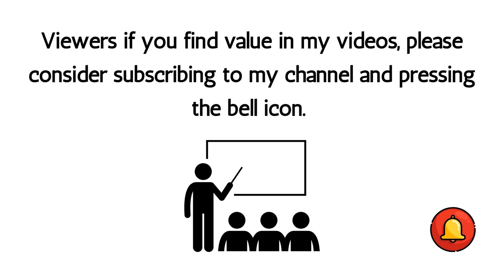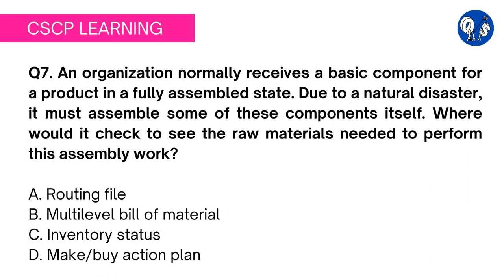If you find value in this video, please consider subscribing to my channel and pressing the bell icon. Question 7: an organization normally receives a basic component for a product in a fully assembled state. Due to a natural disaster, it must assemble some of these components itself. Where would it check to see the raw materials needed to perform this assembly work? Option A: routing file. Option B: multi-level bill of material. Option C: inventory status. Option D: make and buy action plan.